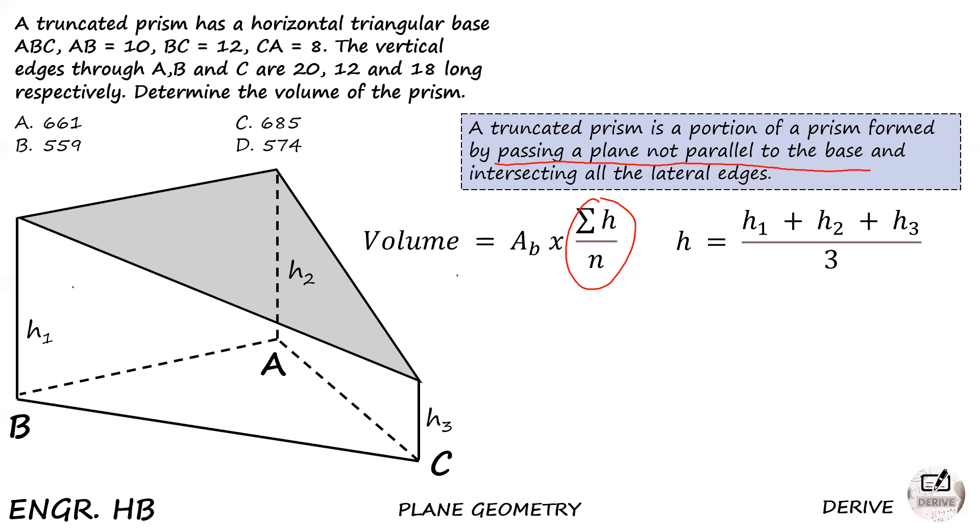H equals H1 plus H2 plus H3 over 3. The vertical edges through A, B, and C are 20, 12, and 18 respectively. So through A, H2 equals 20. Through B, H1 equals 12. And through C is 18.